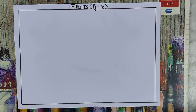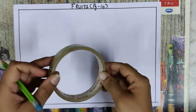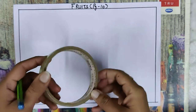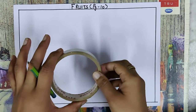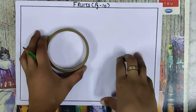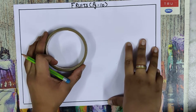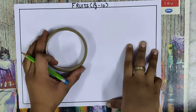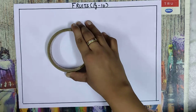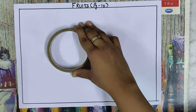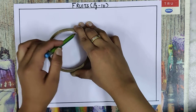Hello students, today your drawing topic is fruits. I am going to teach you how to draw a fruit. First you have to take any kind of utensil — you can use a tape roll for a circle. The first step is to draw a circle with the help of any kind of utensil. You can use a bottle cap, tape roll, or bangle. So first, draw a circle like this.